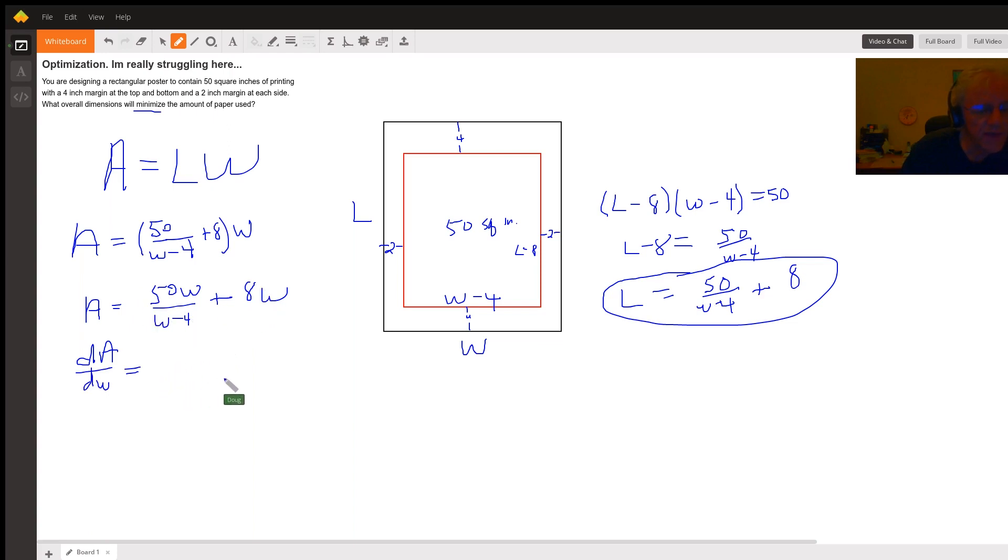Once we've got that, we'll set the expression for the derivative equal to 0, solve for W, eliminate any W values that don't make sense.